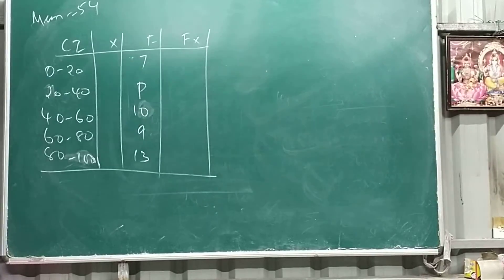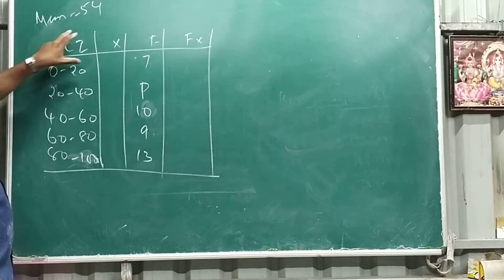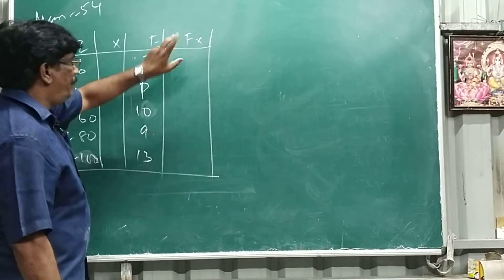See, now same method with the class interval. Mean is given 54, class interval given, then F given, find p-value Fx.